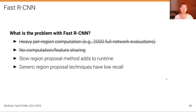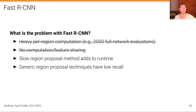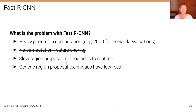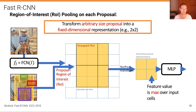The advantage now is that we don't have heavy per-region computation anymore — we don't require 2000 full network evaluations. We've offloaded this to the backbone and just require lightweight MLP evaluations per region, effectively making use of feature sharing and computation sharing. But we still have the slow region proposal method adding to the runtime, and the generic region proposal technique still has low recall.